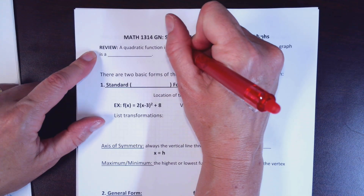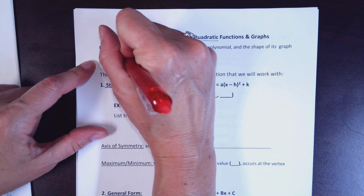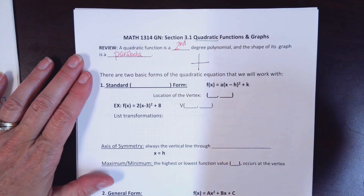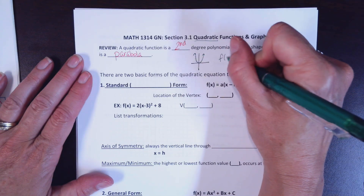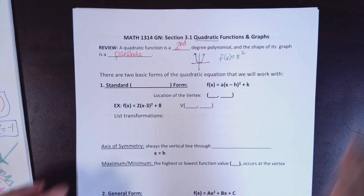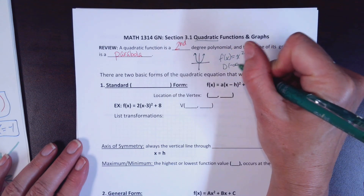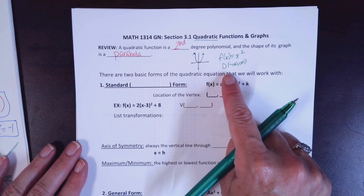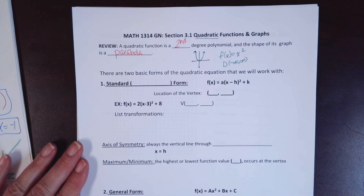A quadratic function is a second-degree polynomial. The shape of its graph is a parabola. The parent quadratic function is f(x) = x². For our quadratic function, the domain is all real numbers — and once it starts as all real numbers, it is always all real numbers. So the domain for every quadratic function will be all real numbers. Range, however, has a limit that can change depending on transformations.